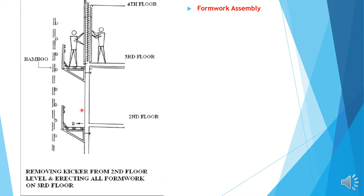Now again you see, the same methodology has been applied. This is removing the kicker. When you want to remove the kicker from the second floor level and erecting aluminum floor on the third floor level.